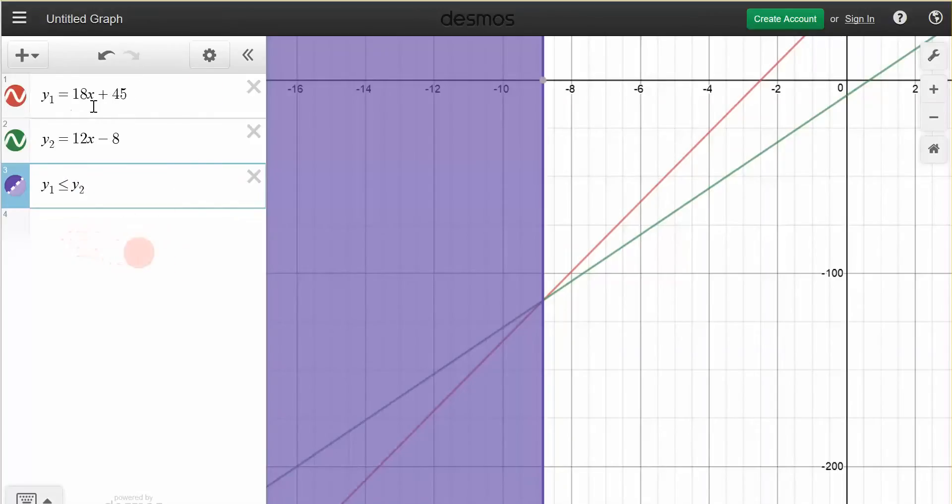What I have is over here in the top, the line y1 is given by the left side of my inequality, which is the line 18x plus 45. Okay, that's this red line that I have right here, my pointer is pointing at. The green line is the right side of my inequality, which is 12x minus 8. So we have these two lines, and you can graph them, because you know how to do that.